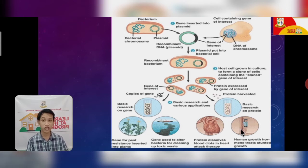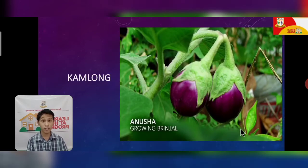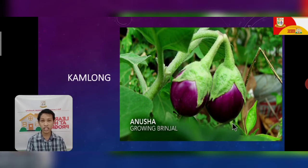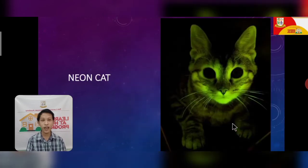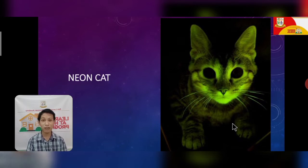Here are examples of animals, plants, fruits, and vegetables that have undergone genetic engineering. First is the famous 'kamlong,' actually produced here in Nueva Ecija by CLSU — it is a combination of tomato and eggplant. It looks like a tomato but it is actually an eggplant. Next is the neon cut or glow-in-the-dark cat. Not just cats — other animals are being tried too, where their fur is made to glow in the dark with neon lights, so they can be easily seen at night.